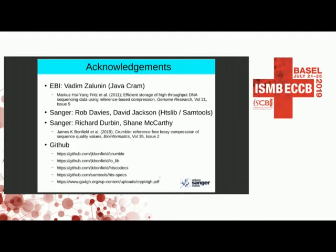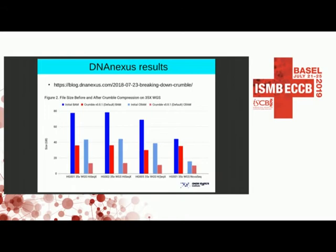Q&A continued: Even when quality values are reduced to only four levels on NovaSeq, lossy compression via Crumble still provides meaningful benefit. Some assume that going from 40 to 4 quality values makes lossy unnecessary, but this data shows it still helps. The gain is somewhat smaller on NovaSeq because quality values form a smaller proportion of the total file size, but it remains beneficial.